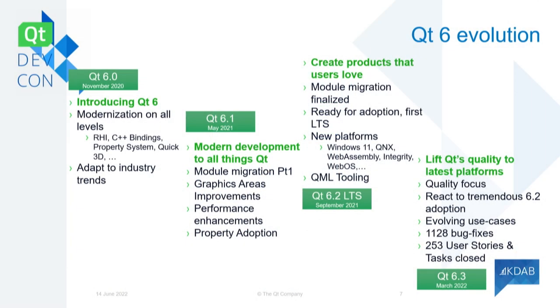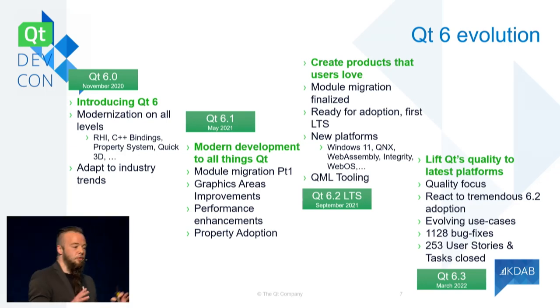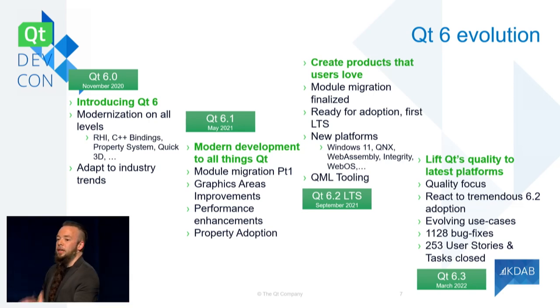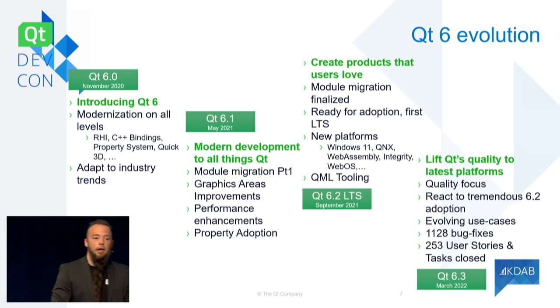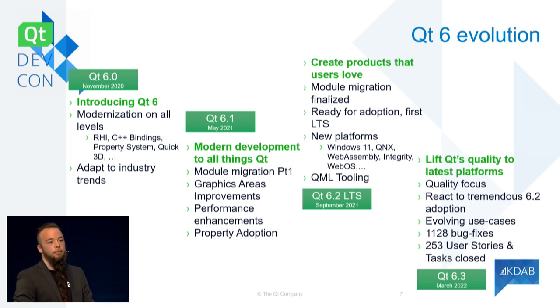I want to start with a bit of background on how we started with Qt 6. It was the end of 2020 when we released 6.0. It had quite many new things: the rendering hardware interface — basically getting rid of the OpenGL hard dependency — binding support, the property system, and C++17 support. At the contributor summit, we agreed we wanted to keep it small. Qt 6.0 would be a small subset of Qt 5, so everyone could try it out, experiment, and from that point we would grow Qt itself. With 6.1, you got more familiar modules from Qt 5 times, and with 6.2, moving on, etc.